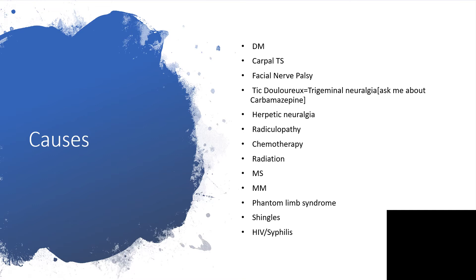Other causes include hepatic neuralgia, radiculopathy, chemotherapy or radiation, which can also cause neuropathic pain. Also on the list are multiple sclerosis, multiple myeloma, and phantom limb syndrome — where the limb is already amputated but the individual still feels pain as if the limb is there. Shingles, that is chickenpox reactivation in immunocompromised individuals, follows a dermatome and could cross the midline in severely immunocompromised individuals. HIV can also cause neuropathic pain. You can see that the list is pretty long.